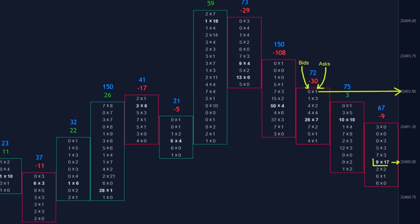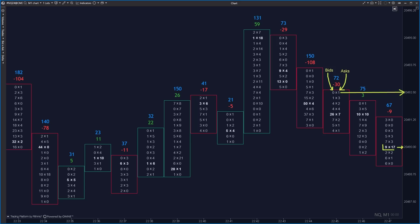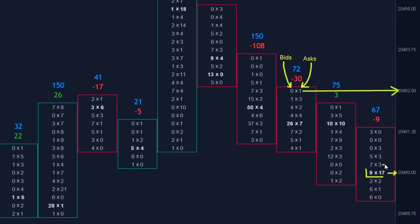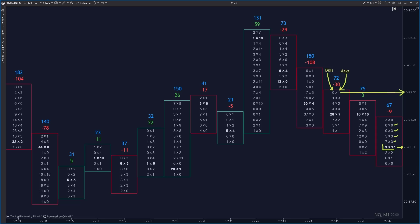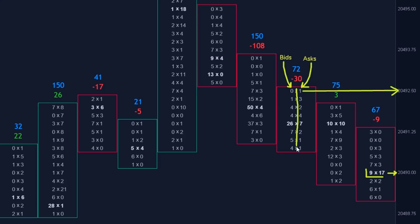If you enter a long position at price 20,490 via a market order and buy one contract, the value in the footprint at that price level increases by one. Market traders buy pending limit orders above the current price. The right side of the footprint — referred to as ask — represents passive sellers or aggressive buyers: either pending limit sales or immediate market purchases. The left side — referred to as bid — represents passive buyers or aggressive sellers: either pending limit buys below price or immediate market sells.